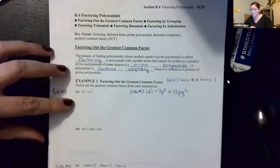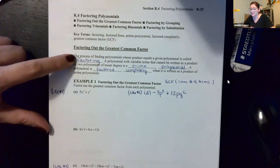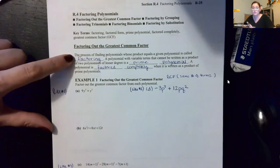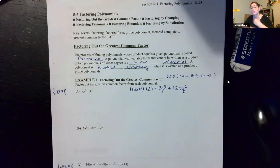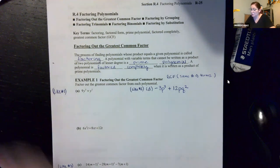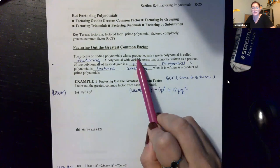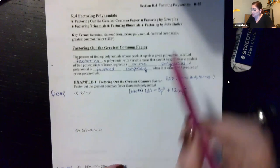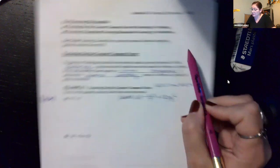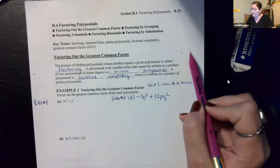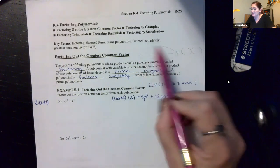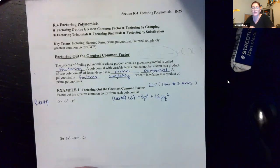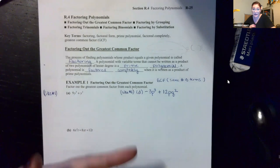For factoring, it's basically the process of finding polynomials — normally in our case there will be two binomials — something with two terms times something with two terms that when you multiply them equals another polynomial. So essentially you start off with the longer one and figure out what things you multiply together to get this big polynomial. That is the process of factoring.